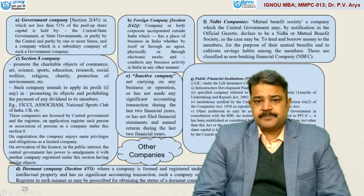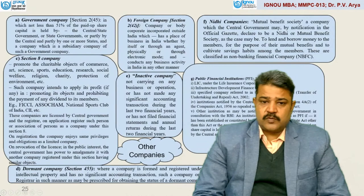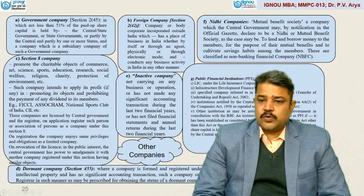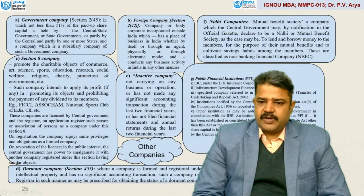The last category under other companies is public financial institution, PFI, under Section 2, Subsection 72. Examples include LIC, which was incorporated under LIC Act 1956, IDFC, a specified company referred to in UTI, institutions notified by the central government under Section 4A Subsection 2 of the Companies Act 1956 (repealed under Section 465 of this act), and other institutions as may be notified by the central government in consultation with RBI. An institution shall be notified as PFI if it has been established by or under a central or state act, or at least 51% of the paid-up share capital is held or controlled by the central government, state government, or partly by central government.